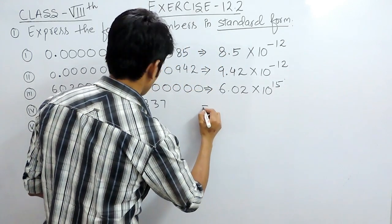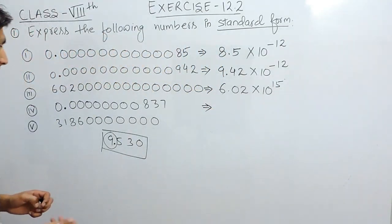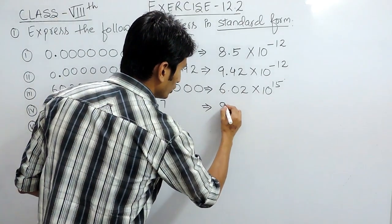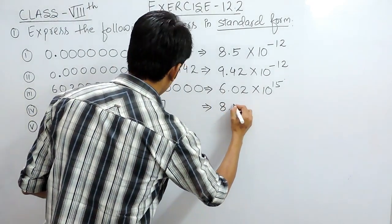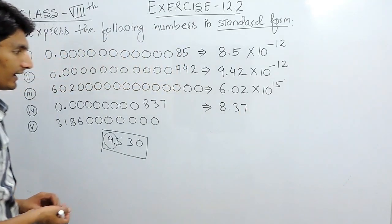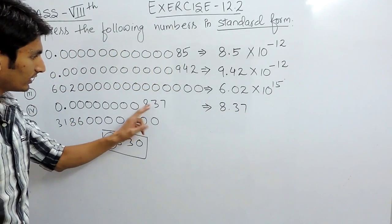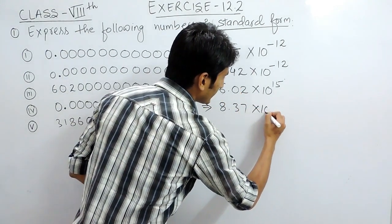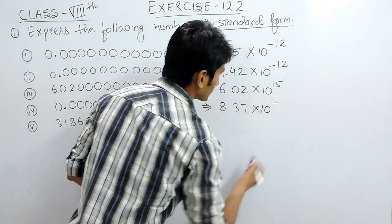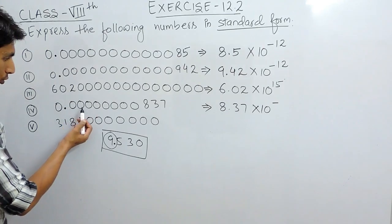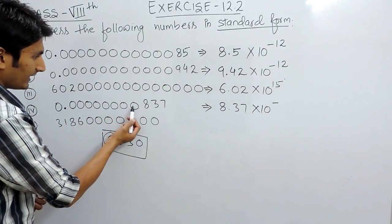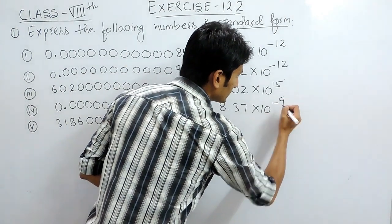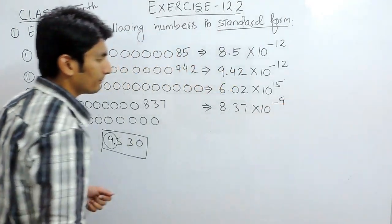Again, in this case, if you want to write this in standard form, you have to write 8.37. Because you are shifting the decimal to the right hand side, you have to write 10 raised to the power minus. You are shifting 9 digits, so you write 10 raised to the power minus 9.